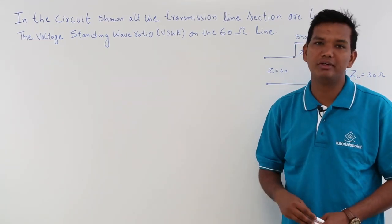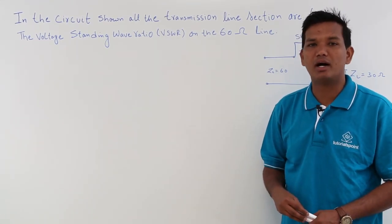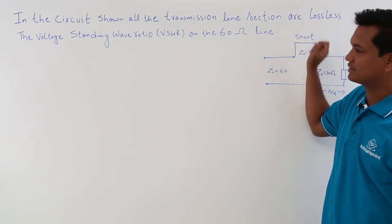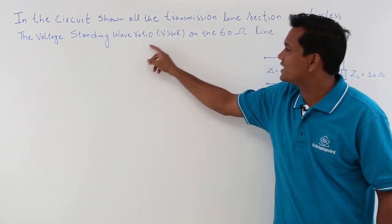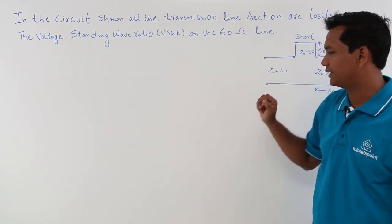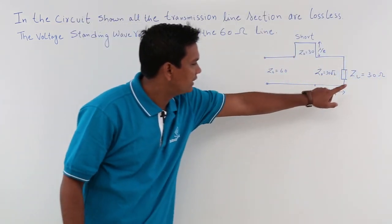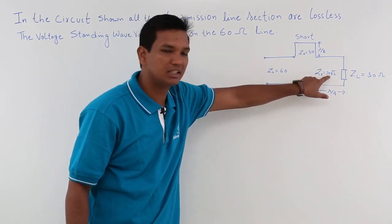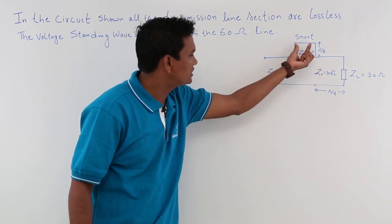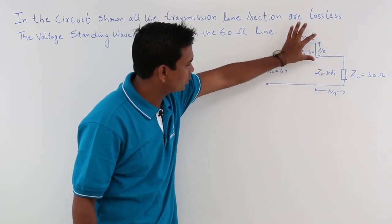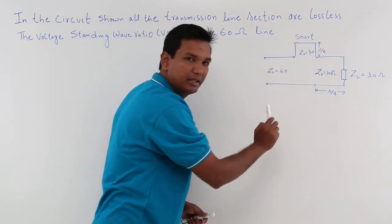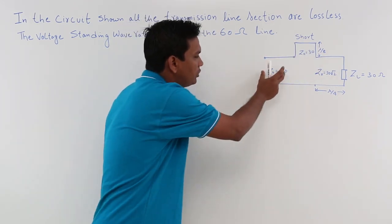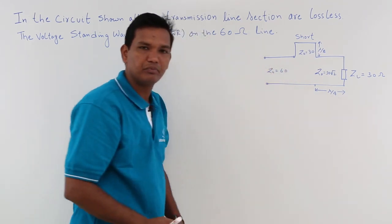In this class, we will try to solve a problem on transmission line. The problem states there is a lossless transmission line, and we have to find the voltage standing wave ratio for the 60 ohm line. Looking at the figure, there is a load ZL of 30 ohms. For that segment, the characteristic impedance is 30 root 2. There is another part which is short circuited, with length lambda by 8 and characteristic impedance of 30. The characteristic impedance of the main part is 60.